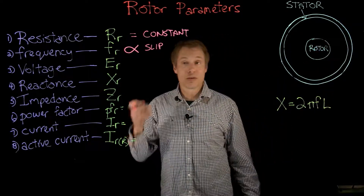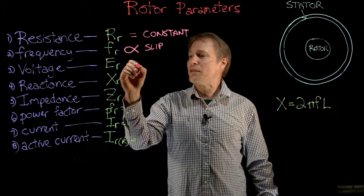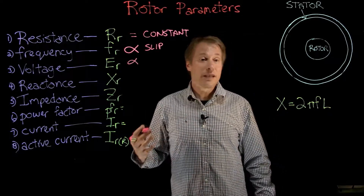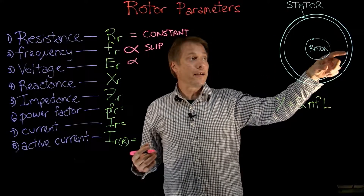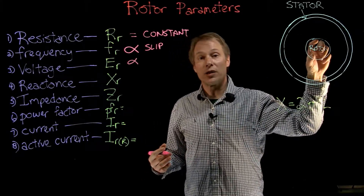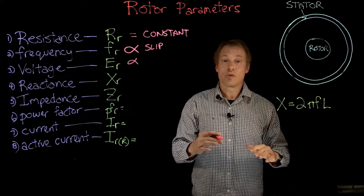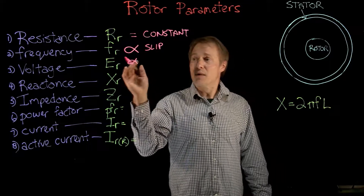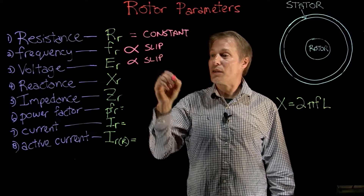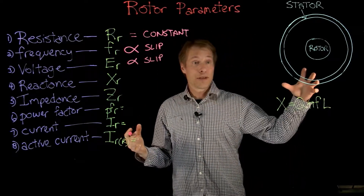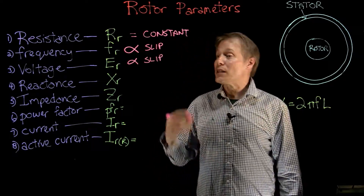Moving on to voltage — it follows the same physical principles. With the rotor stopped and the stator doing its thing, the highest voltage is induced at blocked rotor condition. As the rotor spins up, the induced voltage goes down. So the induced voltage in the rotor is also proportional to slip — as the rotor speeds up, induced voltage goes down.